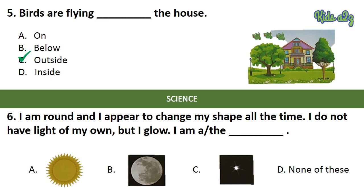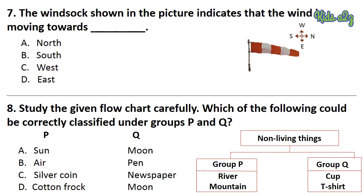Question 6: I am round and I appear to change my shape all the time. I do not have light of my own, but I glow. I am the dash. The answer is Option B — Moon. Question 7: The windsock shown in the picture indicates that the wind is moving towards dash. The answer is Option A — North.